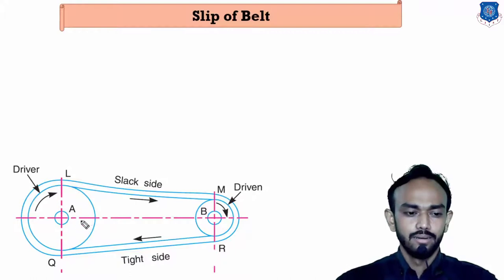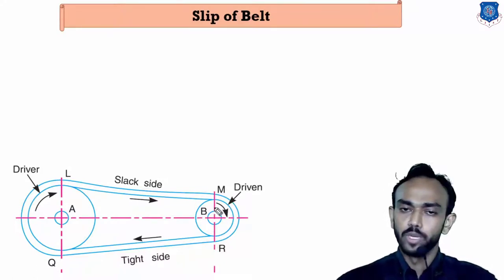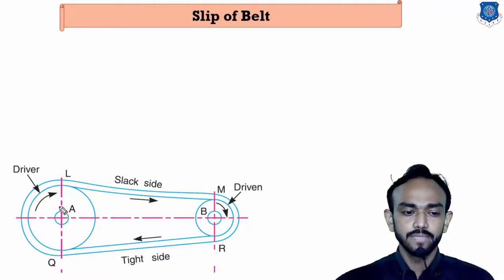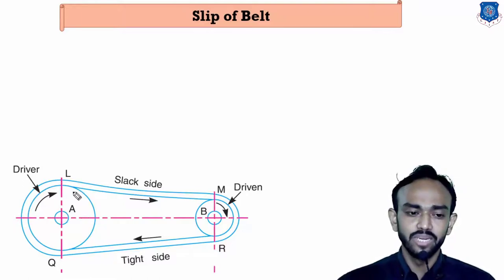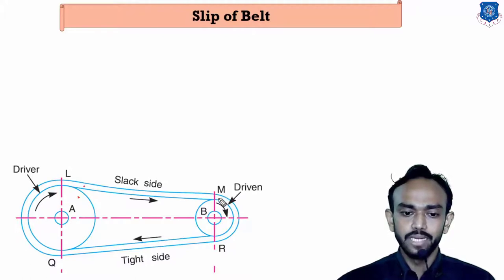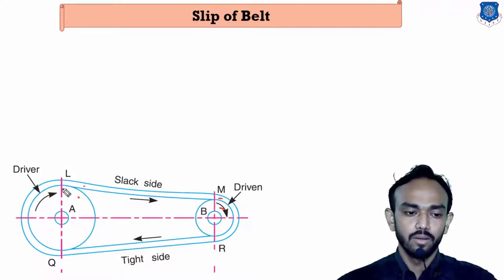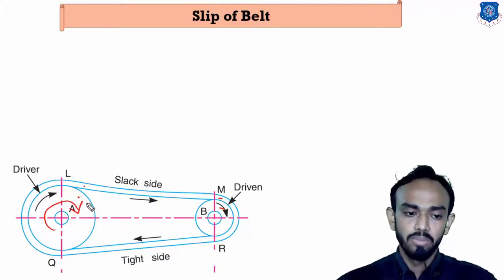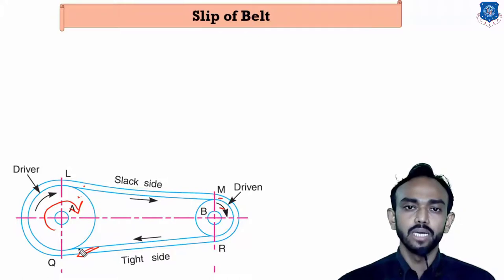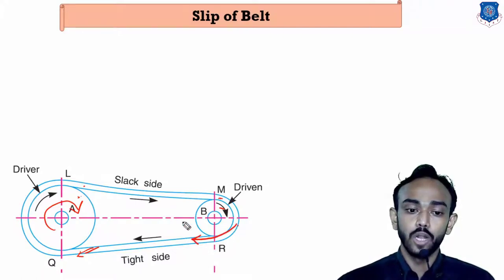There is a driver pulley connected to a belt and a driven pulley. Belt drive is totally dependent on friction — friction between the driver pulley and belt, and also between the belt and the driven pulley. If friction between the driver pulley and belt is less, the driver pulley rotates but the belt may not move with it, causing slippage. Similarly, the belt may move without rotating the driven pulley, so slippage can occur on both sides.